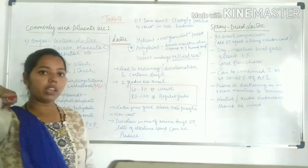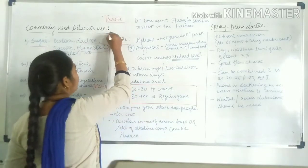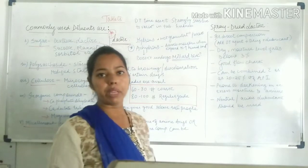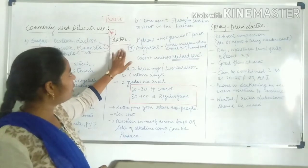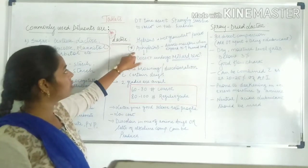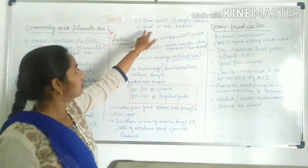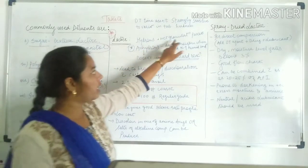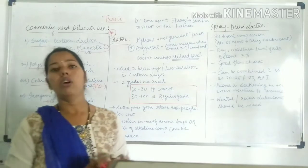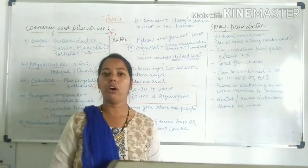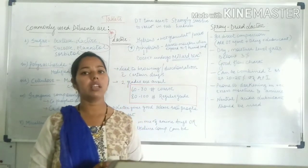Lactose is the most widely used diluent in tablet formulation. It is commercially available in two forms: hydrous and anhydrous. The hydrous form is generally used in the wet granulation process. There are three methods of tablet manufacturing: wet granulation technique, dry granulation technique, and direct compression.